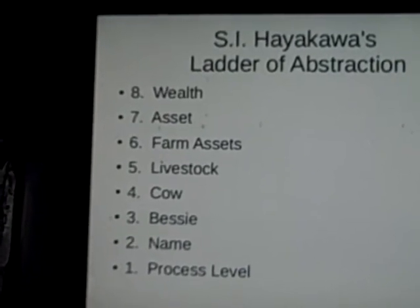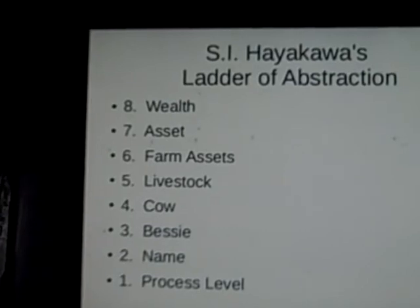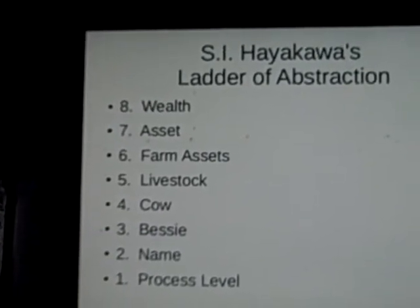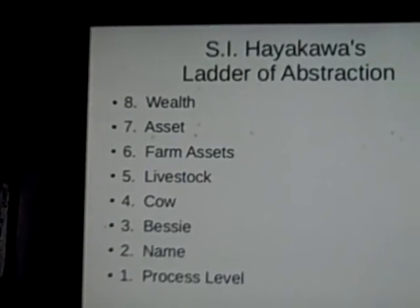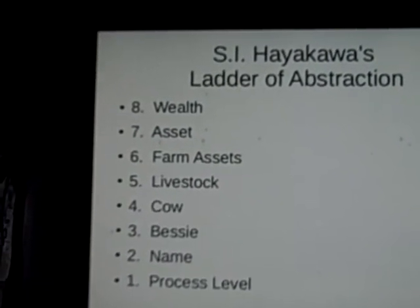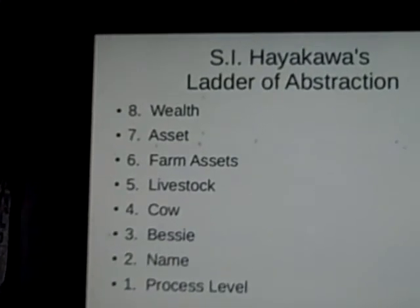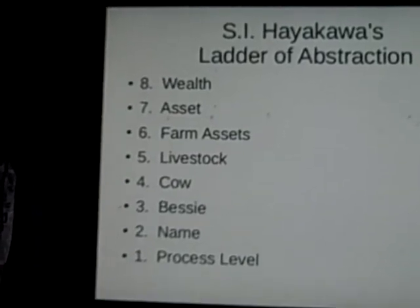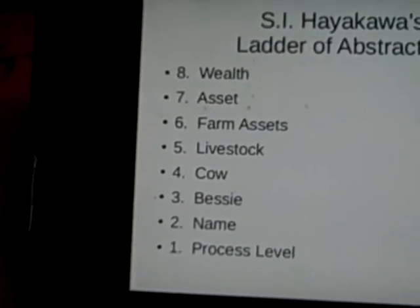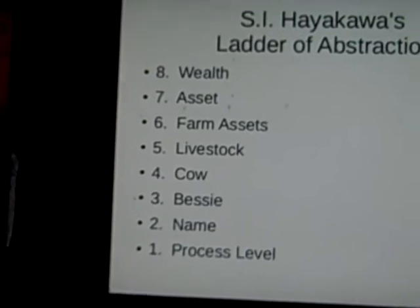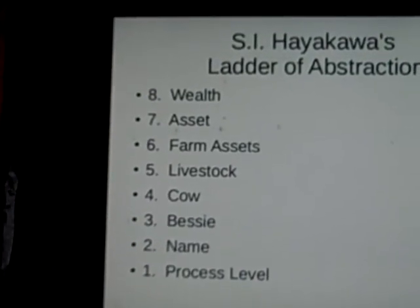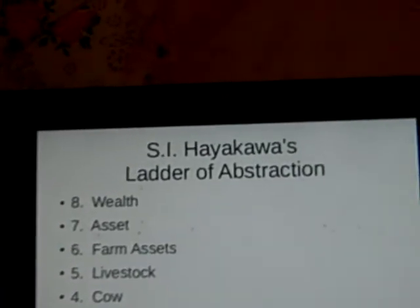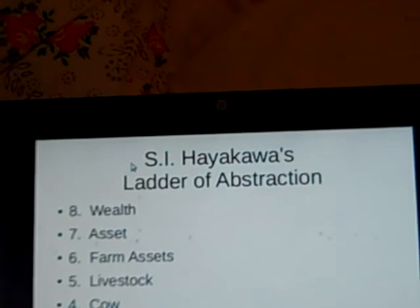Level three is Bessie — the name we give to the object of perception. Level two: the name does not equal the object; the name stands for the object and omits reference to many characteristics. Cow is not the word, but the object of experience which our nervous system abstracts and selects from the totality that constitutes the process cow — many characteristics are left out. Number one, the process level: cow as known to science, with atoms and characteristics that are infinite. This is all from S.I. Hayakawa's Ladder of Abstraction.